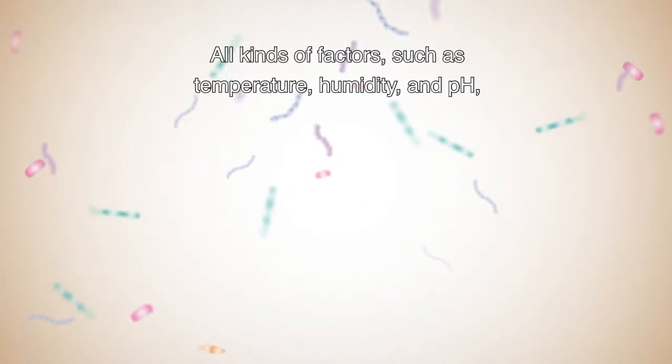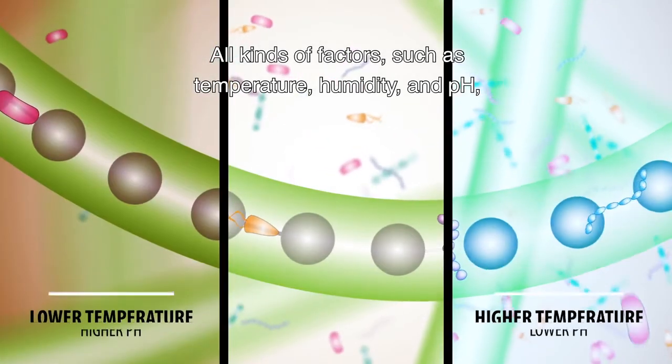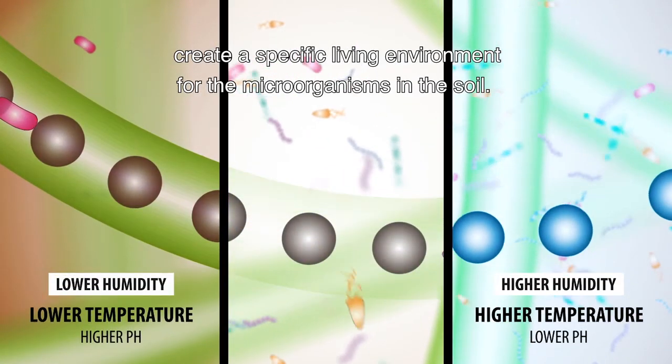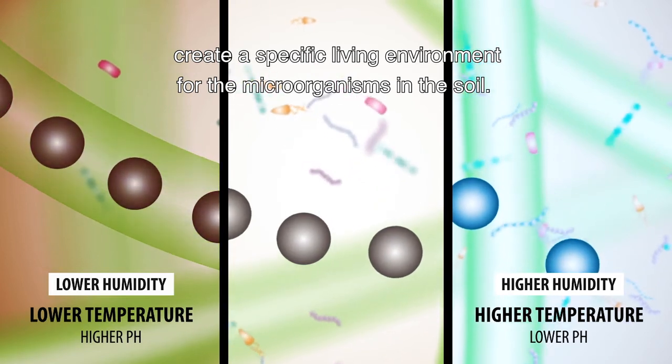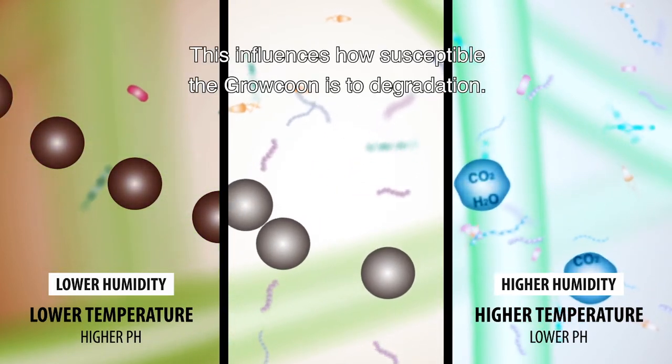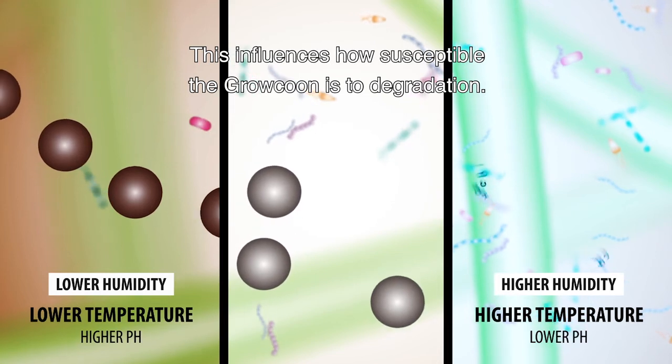All kinds of factors such as temperature, humidity and pH create a specific living environment for the microorganisms in the soil. This influences how susceptible the GroKoon is to degradation.